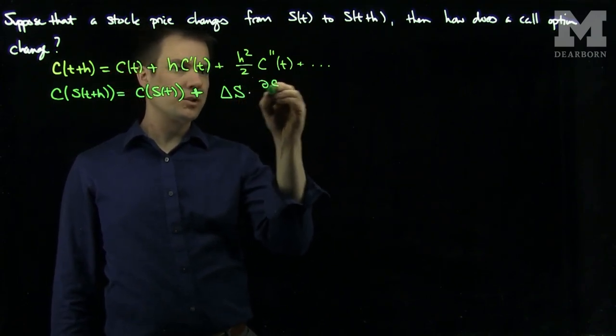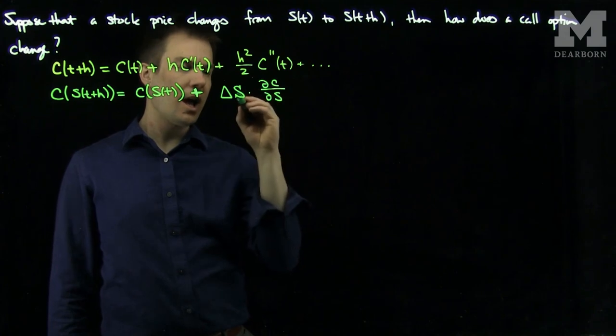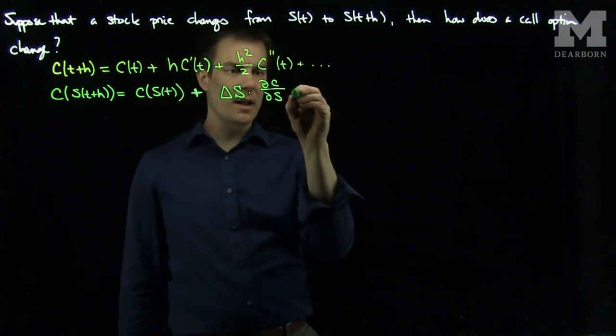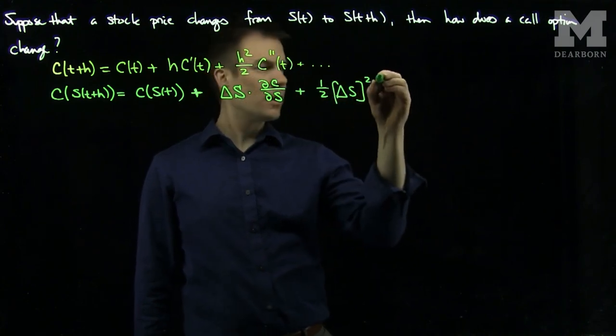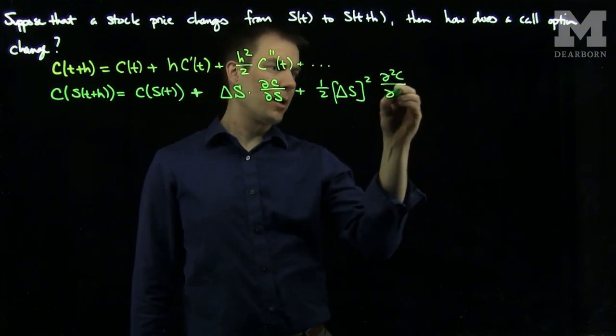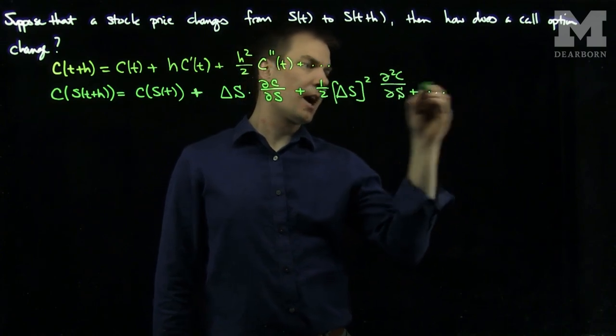And then I'll have a one-half (ΔS)² ∂²C/∂S² plus the higher order terms.